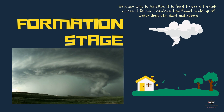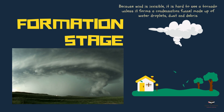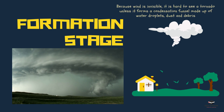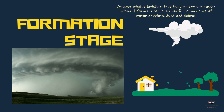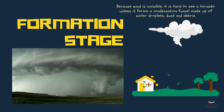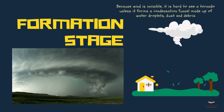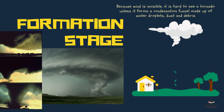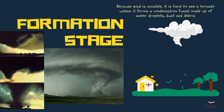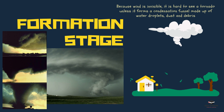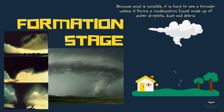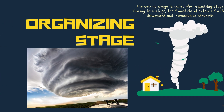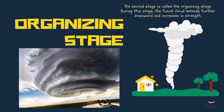A tornado starts when there's a big storm called a severe thunderstorm. Certain conditions like strong upward moving air and changing winds make it easier for a tornado to form. The upward moving air starts to spin and becomes a rotating column of air called a mesocyclone. This is the first step in making a tornado.